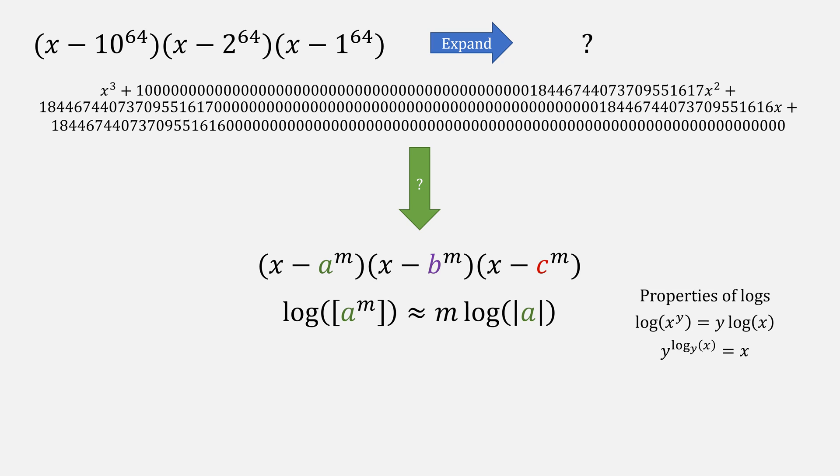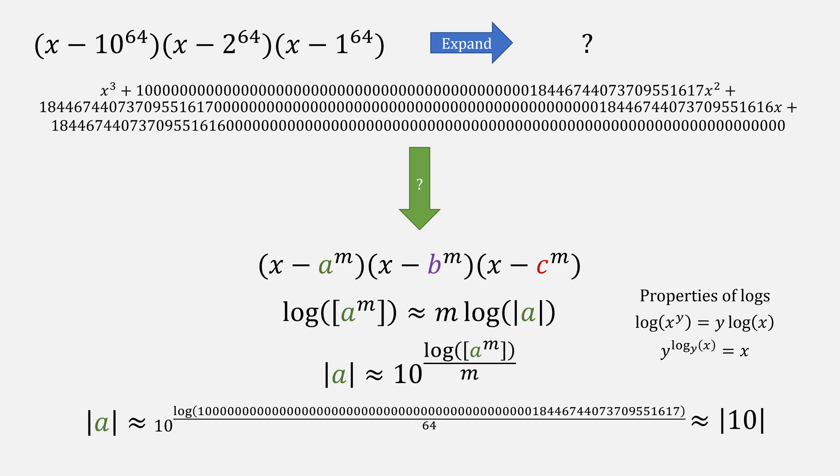Using another property of logs being that if I take a number and raise it to the log of that number I get what was the argument of the log. Using that knowledge I can solve for the absolute value of a. Plug in our bracket a^m into our logs function and we get that a is approximately the absolute value of 10.